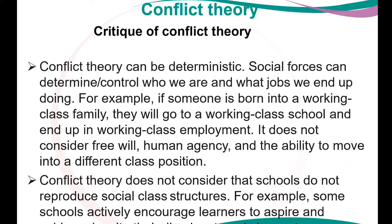The next aspect is the critique of conflict theory. Conflict theory can be deterministic, meaning that social forces can control or determine who we are and what jobs we end up doing. For example, if you are born into a working class family, it is possible that you will go to a working class school and end up in working class employment. It does not consider free will, human agency, and the ability to move to a different class position.